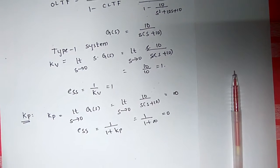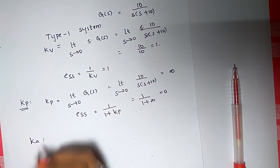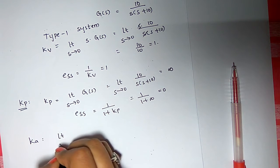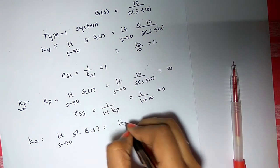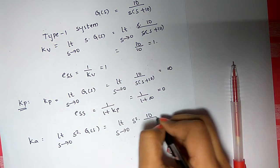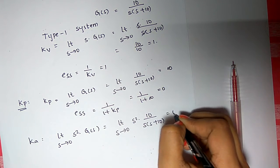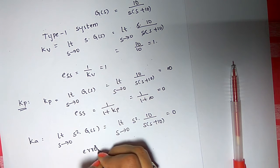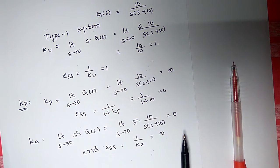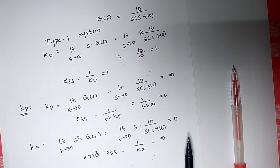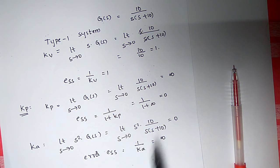Now let's check KA. KA equals the limit as s tends to 0 of s² times G(s). Substituting: limit as s tends to 0 of s² times 10/[s(s+10)], which equals 0. So ESS = 1/KA = infinity. Therefore, for a type 1 system: error due to step input is 0, error due to ramp input is some finite value, and error due to parabolic input is infinity.